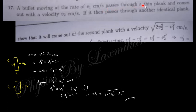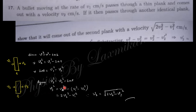The next question: a bullet moving at v1 cm/s passes through a thin plank and comes out with velocity v2. It then passes through another identical plank; find v3. Using v² = u² − 2as (retardation): v2² = v1² − 2at, so 2at = v1²−v2². For the second plank: v3² = v2² − 2at = v2² − (v1²−v2²) = 2v2²−v1². Therefore v3 = √(2v2²−v1²).